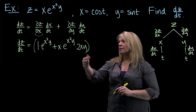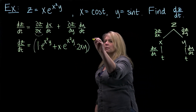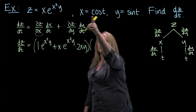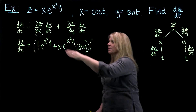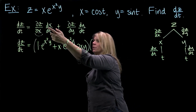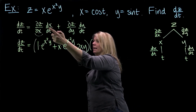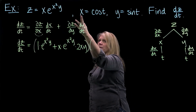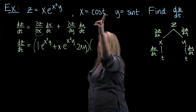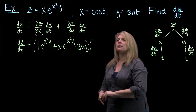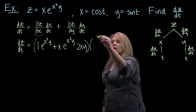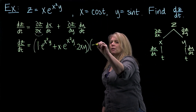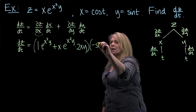Then I need to take that times dx/dt. Letting the symbols tell me what to do, dx/dt is the derivative of the x function with respect to t. Since x = cos(t), the derivative of cosine is negative sine.